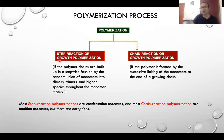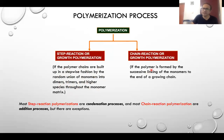Step-reaction or step-growth polymerization is also often called condensation polymerization in older textbooks. In this process, polymer chains are built up in a stepwise fashion by the random union of monomers into dimers, trimers, or higher species throughout the monomer matrix. In contrast, in chain-growth polymerization, the polymer is formed by successive linking of monomers to the end of a growing chain.